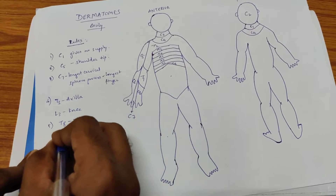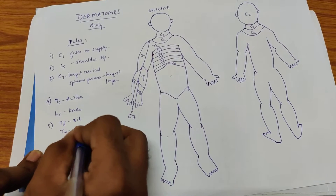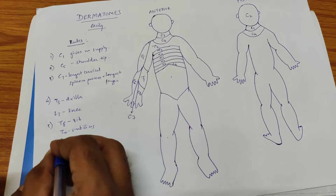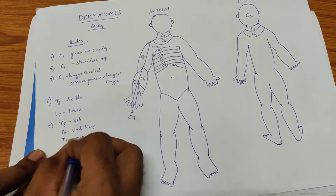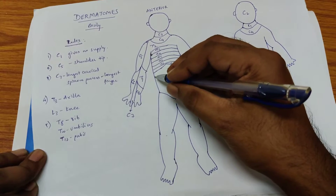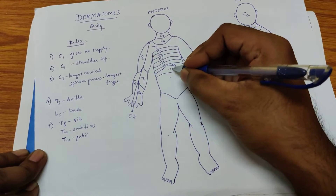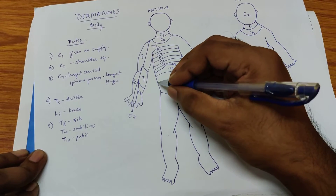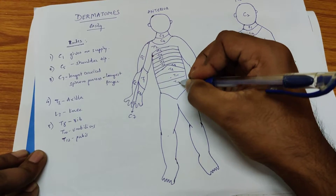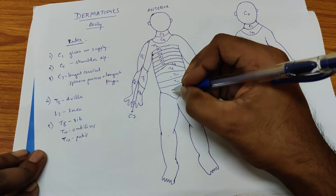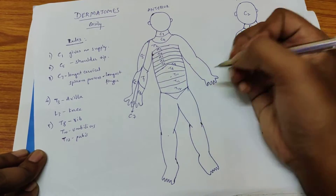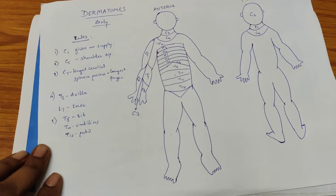T8 supplies the subcostal area. T10 supplies the umbilicus and T12 supplies the pubis. So the sequence is T8 for the lower ribs, T9, T10 for the umbilicus, T11, and T12 for the pubis area.